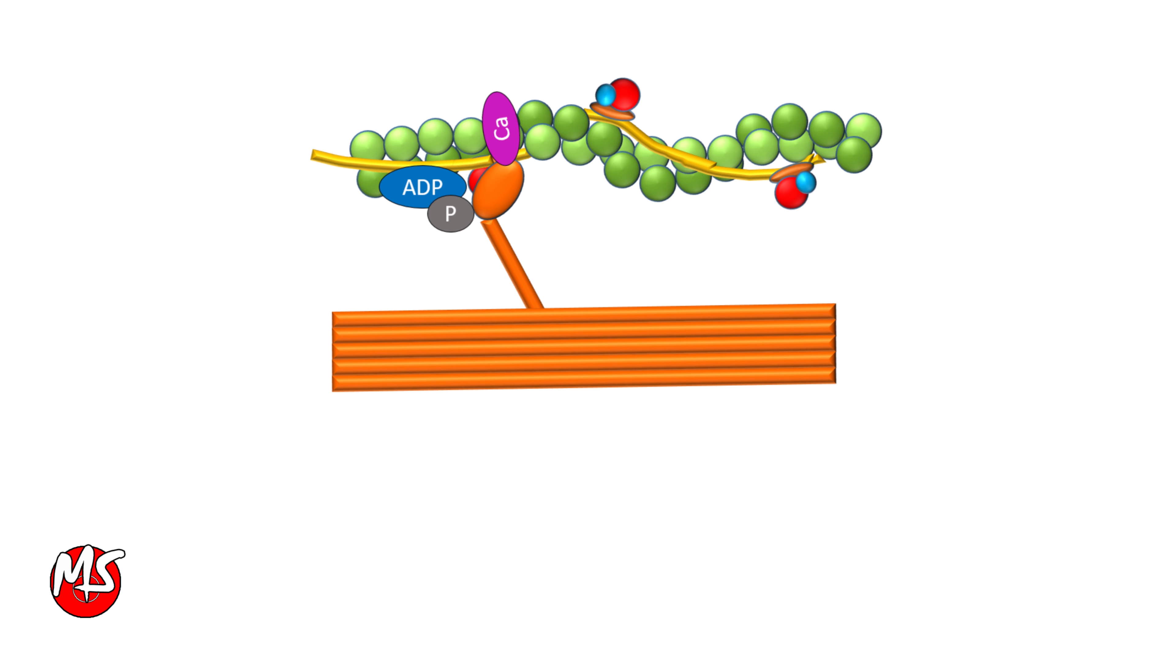As the energy is utilized, the ADP and inorganic phosphate are released. And when the next ATP is attached to the myosin head, it unbinds from the actin and comes to its relaxed state. ATP is then hydrolyzed by the myosin head into ADP and inorganic phosphate.